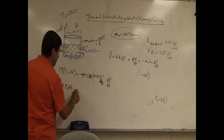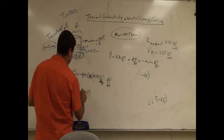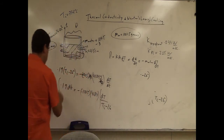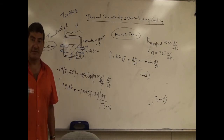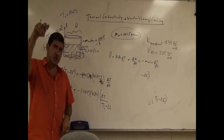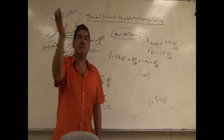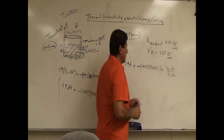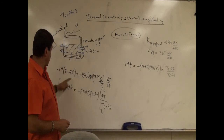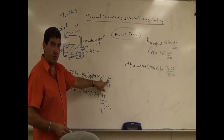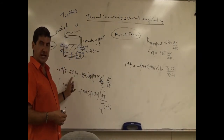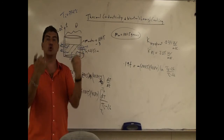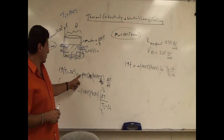Rearranging: 0.19 dT equals negative 0.1015 times 4184 times dT over (T_initial minus 26). Then integrate that. The temperature drops as a natural log function — initially it drops very fast, then begins to plateau. As you reach room temperature, the rate of cooling slows. The negative sign is there because the change in temperature is negative while the power flowing out is positive, so both sides remain consistent in sign.